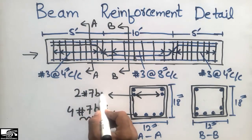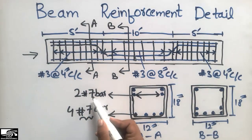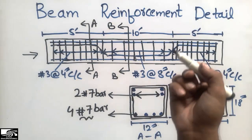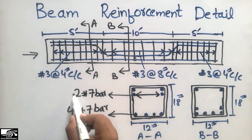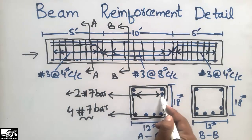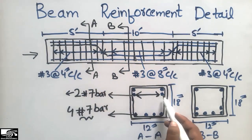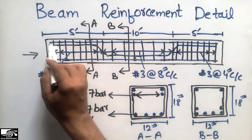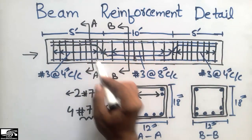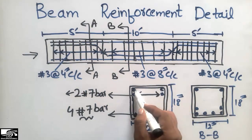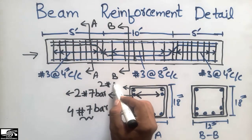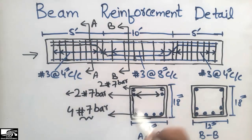I'm just assuming these are number 7 bars — it's not given here, but I'm demonstrating how to read the drawing details. So there are 2 number 7 crank bars in Section AA. The topmost bars, which are used to hold the stirrups and provide compression reinforcement, run throughout the length of the beam. In Section AA you can see these are two top bars — also 2 number 7 bars.